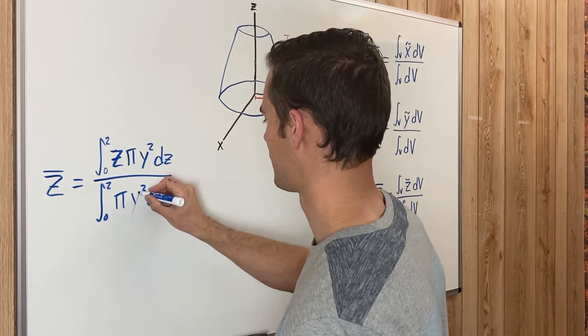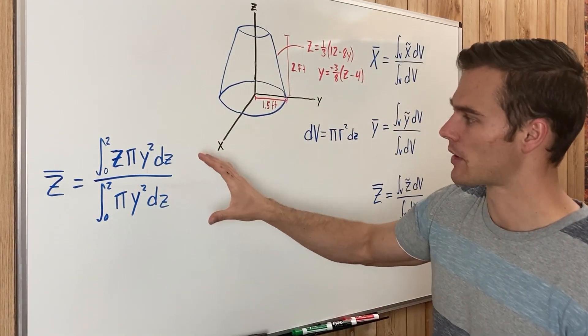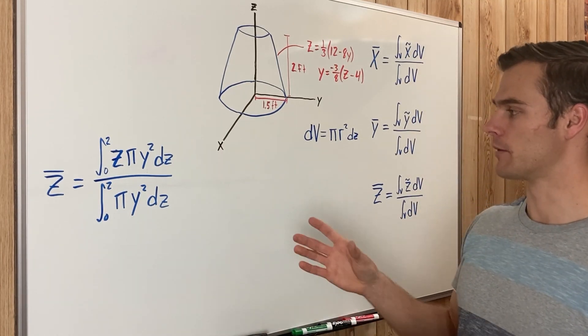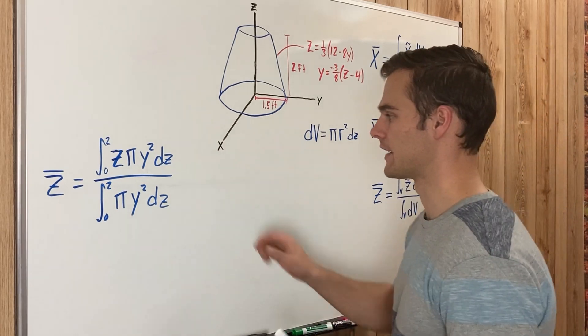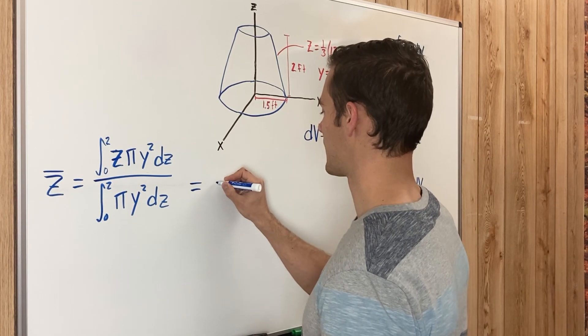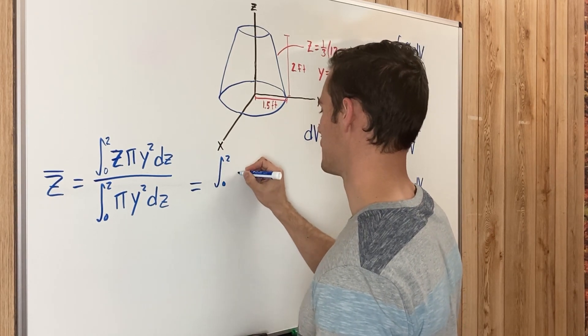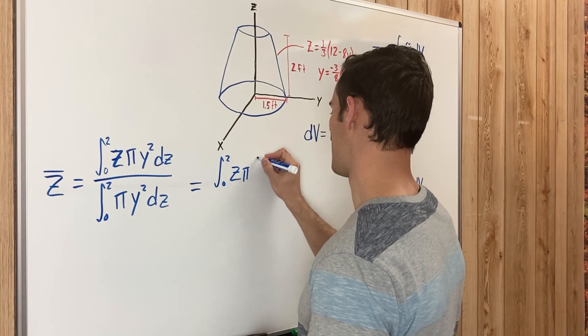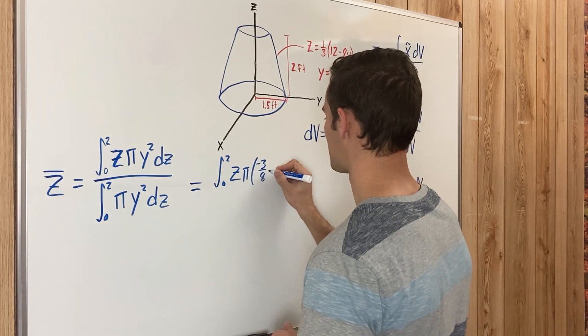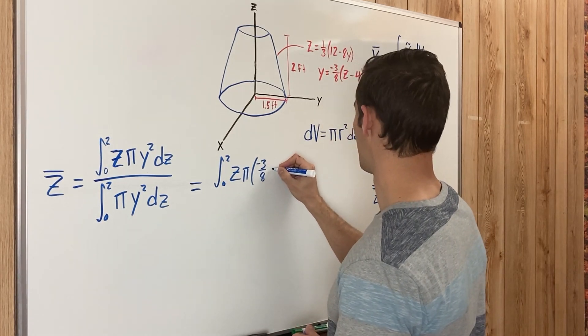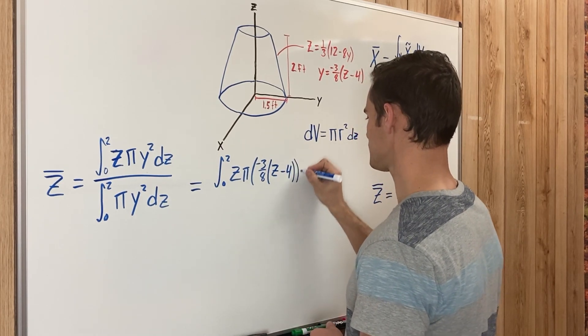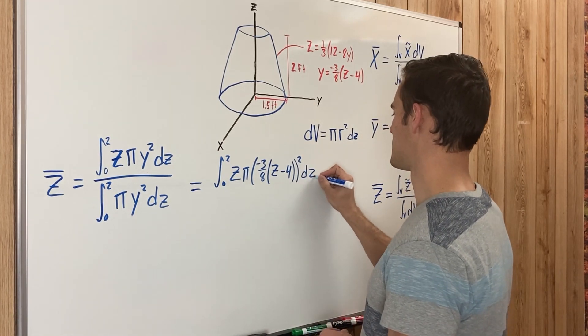So I think that this part, just setting it up, is the hardest part of the whole thing. Once you've got it set up, once you know what variables you need to go where, the calculus isn't even that difficult usually, especially if you can just plug it into a calculator. But plugging what we know into that, it goes from zero to two, Z times π, then Y is this negative three-eighths times Z minus four, all that squared, dz.